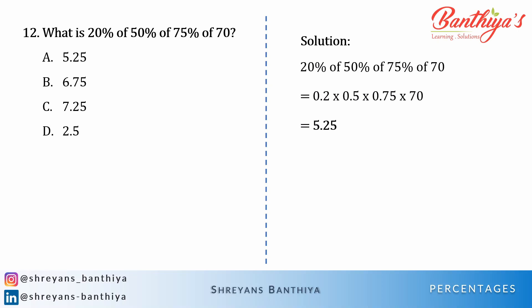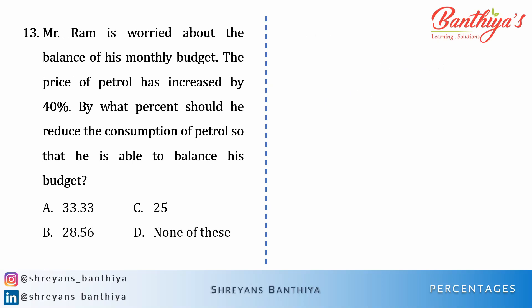Now let's see the 13th question. Mr. Ram is worried about the balance of his monthly budget. The price of petrol has increased by 40%. By what percent should he reduce the consumption of petrol so that he is able to balance his budget? This is a very easy question — we have already seen such kinds of questions in previous videos. But here the words have made the question difficult to understand. The simple logic is: increase in price, reduction in consumption is the question, but with the story it becomes complex.